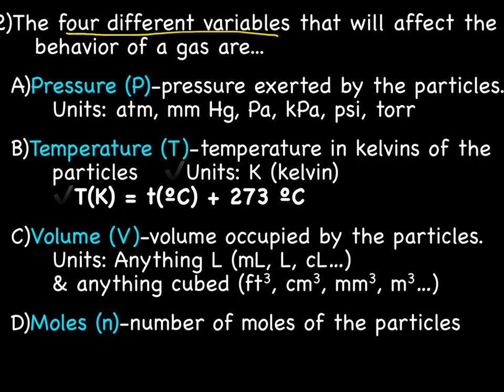The four variables are: pressure, abbreviated P, which is the pressure exerted by the particles. The units can be ATM, mmHg (millimeters of mercury), Pa (pascals), kPa (kilopascals), PSI (pounds per square inch), and Torr. Then we've got temperature, represented by a capital T.